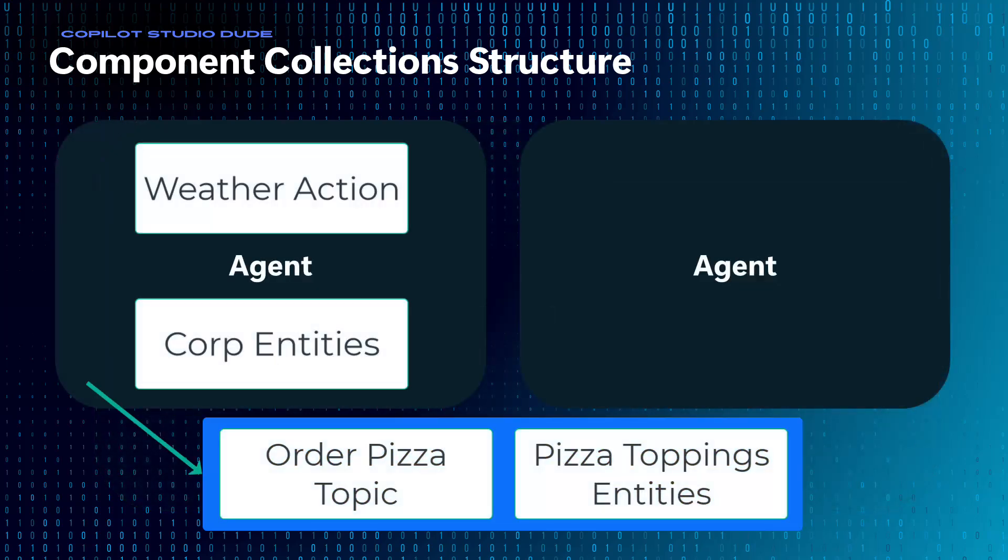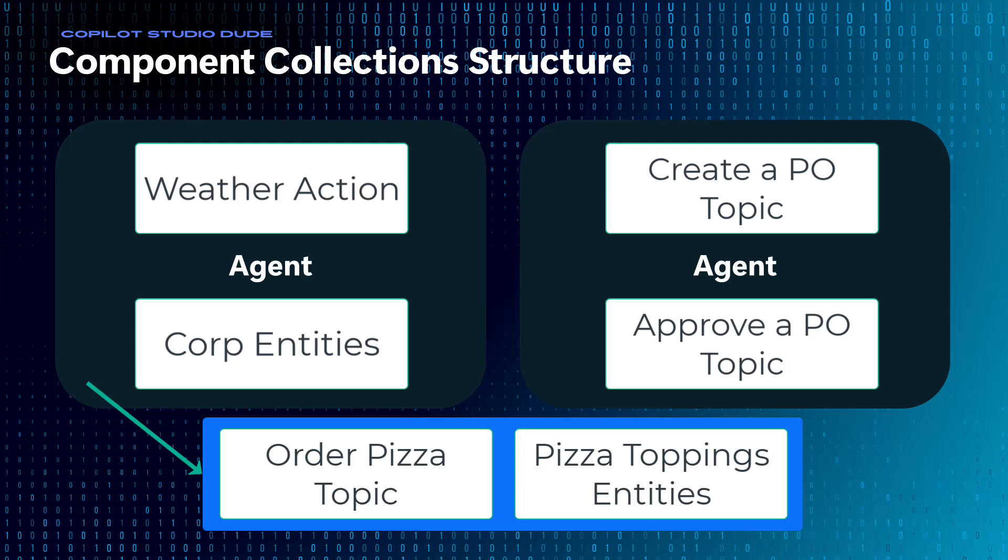So now you have something that looks a lot like this, where we have moved the order pizza topic and pizza topping entities into their own solution that is a component collection, and we have associated that to the agent we were in before. Now if we wanted to add additional things — let's say another agent — we wanted to add the order pizza capability to it, we would simply point to it and make it available inside of that agent. Then we have a shared dependency between two different agents using the same implementation for ordering a pizza.